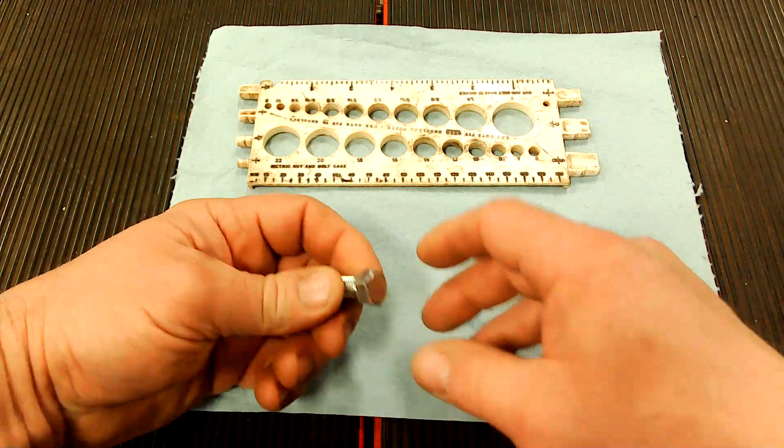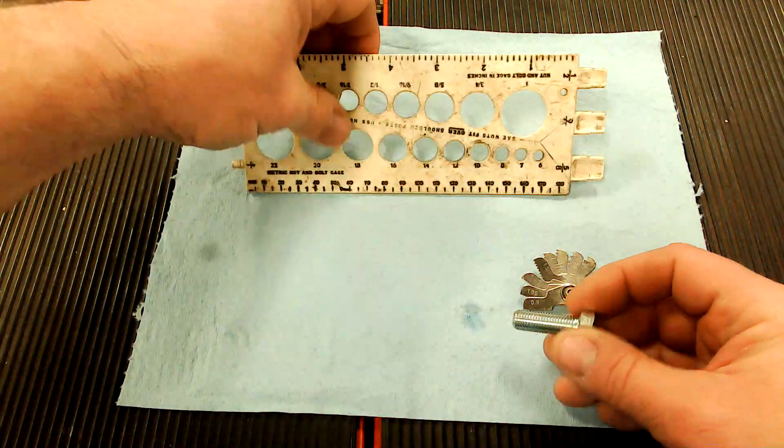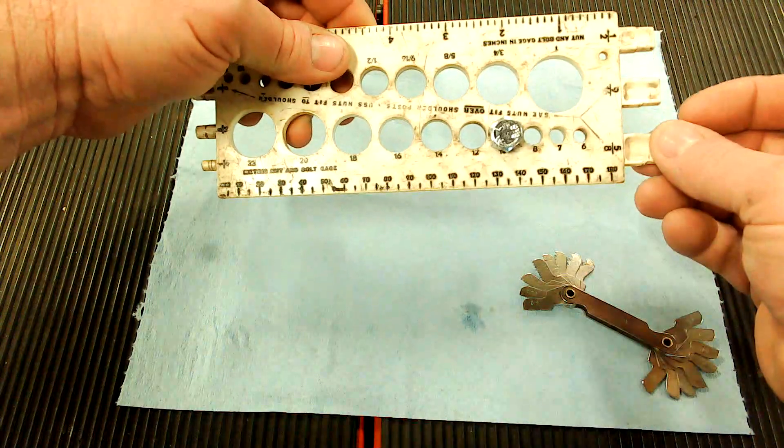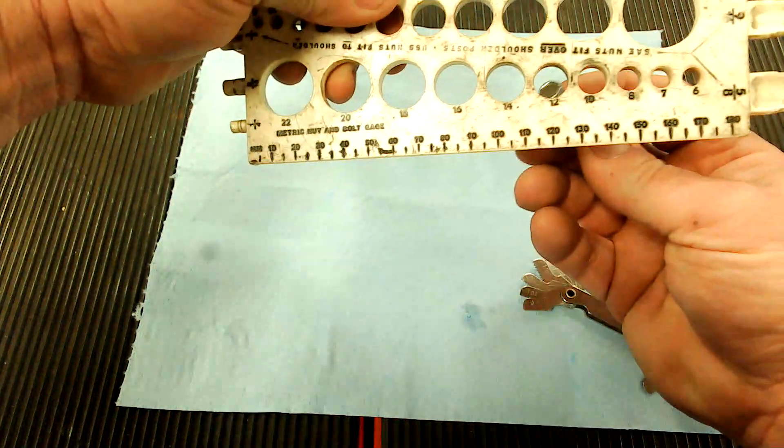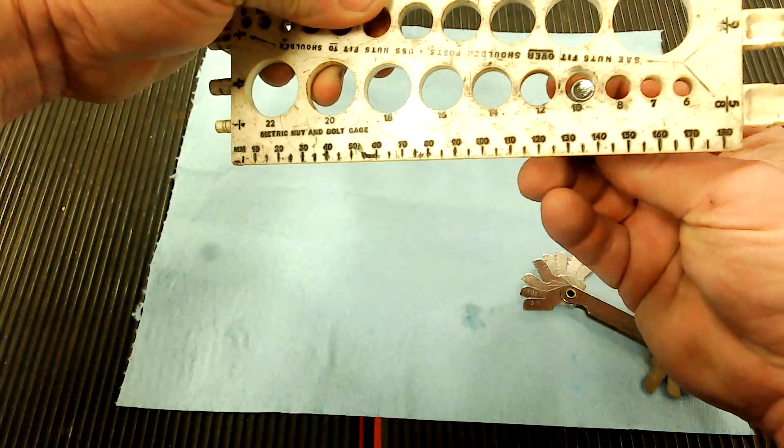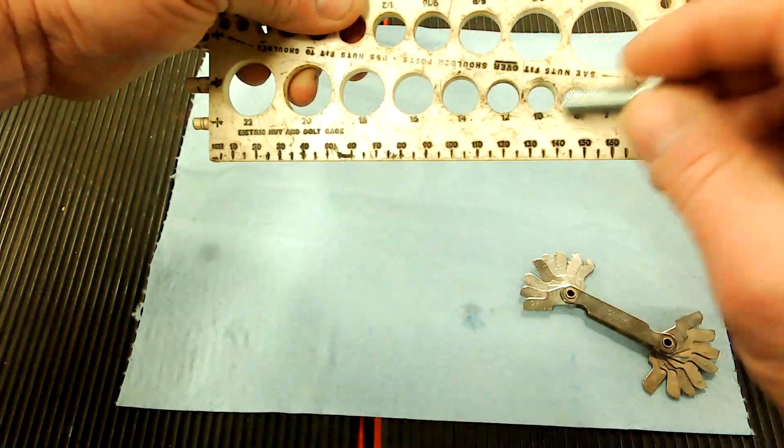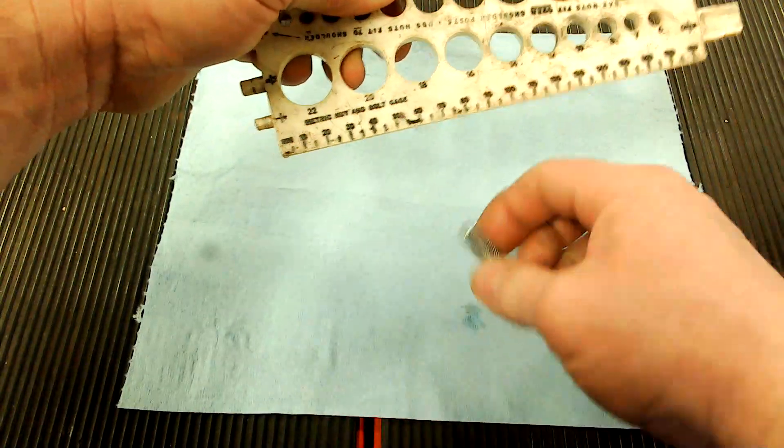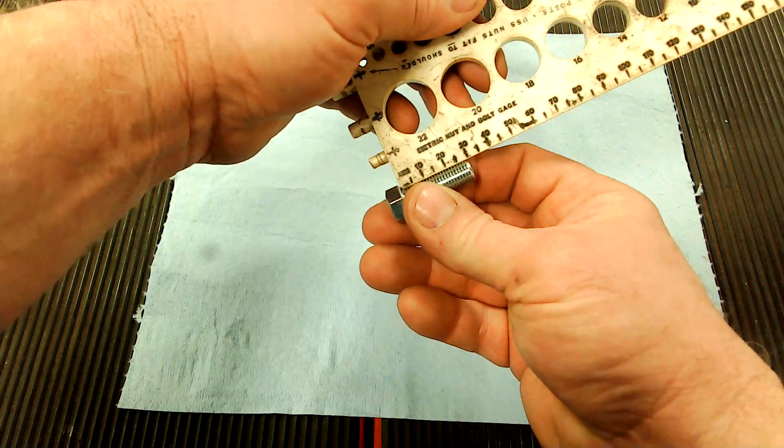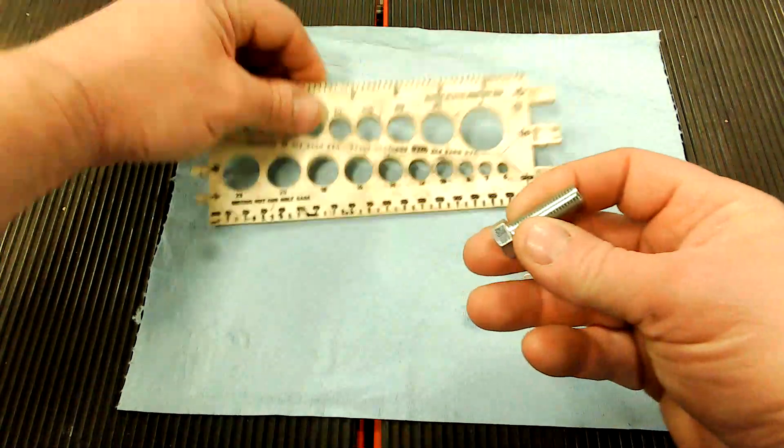And again, I'm going to use the same gauge to measure the diameter. It is a 10. You can stick it up through some of the other holes, obviously. Can't go through 8. So this is a 10 millimeter in diameter. And again, measure the length. This is 30 millimeters in length.